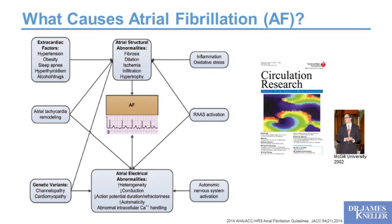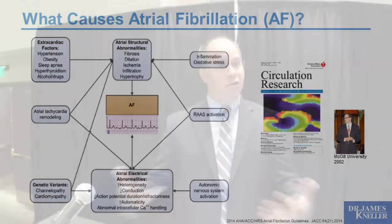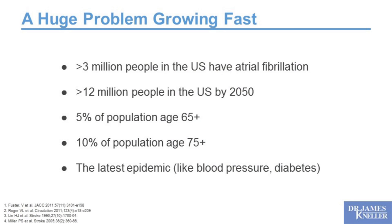How complex rhythms sustain themselves was the topic of my PhD at McGill University in 2002, published on the cover of a cardiac journal. But the relevant question is: do you have it, and if so, how can we best treat you to minimize consequences and maintain normal rhythm? Over 3 million people in the United States currently have atrial fibrillation — projected to exceed 12 million by 2050. It affects 5% of those over 65 and 10% over 75, becoming the latest epidemic.